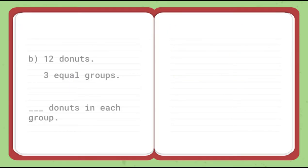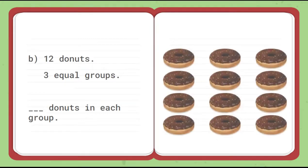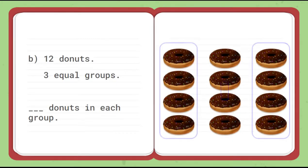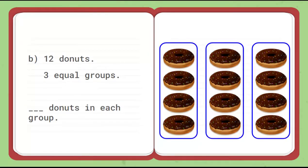Let's take one more example. 12 donuts, 3 equal groups. So let's take 12 donuts and make 3 equal groups. We can see 4 donuts in each group.